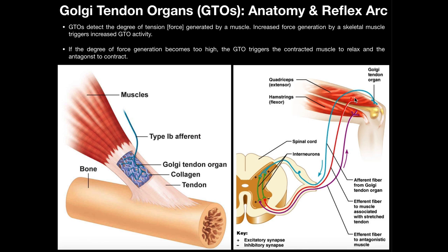These two interneurons function differently. One interneuron synapses with the red motor neuron going to the quadriceps — the muscle we want to inhibit — and this interneuron inhibits that red neuron, triggering inhibition of the quadriceps to decrease the force they're generating. In contrast, the second interneuron synapses with the purple motor neuron going to the hamstrings, which we want to contract. This interneuron activates the purple motor neuron, which then activates the hamstrings. So when the quadriceps generate too much force threatening the patellar tendon, the quadriceps become inhibited and the hamstrings become activated.